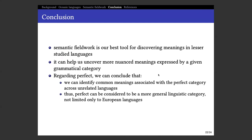Regarding perfect, we can conclude that we can identify some common meanings associated with the perfect category across unrelated languages. In my thesis, I also took other languages into account and really saw that this pattern of a few core meanings is widespread across oceanic languages. The conclusion is that perfect can be considered a more general linguistic category, not only limited to European languages — and that's actually one big debate in the literature. Looking at Nafsan, I think we do have grounds to consider it a category worth studying in a whole variety of languages.